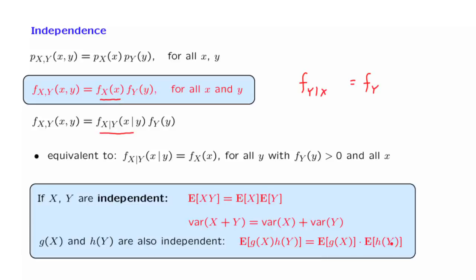So independence of continuous random variables is pretty much the same as independence of discrete random variables, as far as mathematics are concerned. And the intuitive content of the independence assumption is the same as in the discrete case. One random variable does not provide any information about the other.